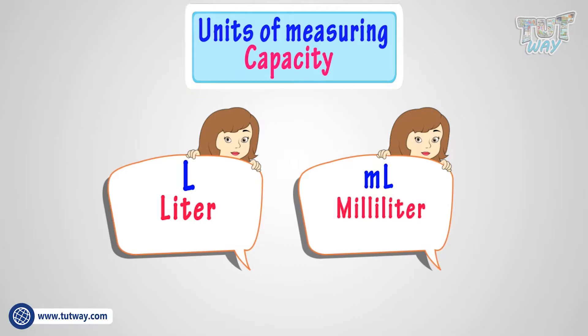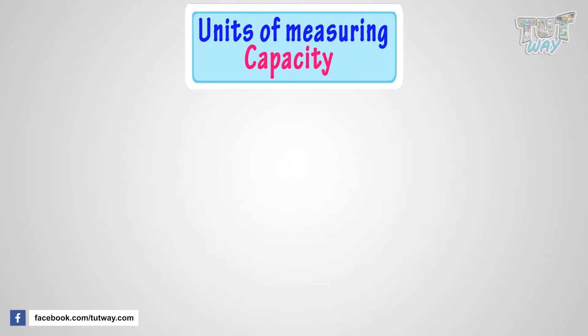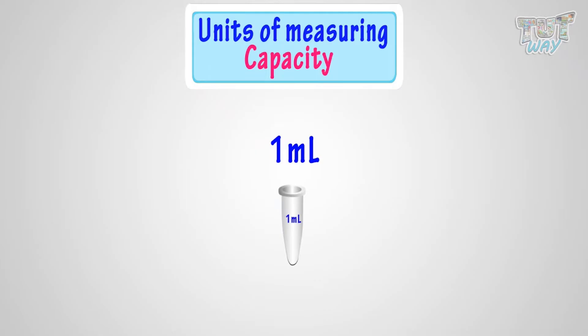Kids, one liter equals 1,000 milliliters. Now, let's see how much quantity is 1 milliliter. This small container can hold at most 1 milliliter of water. So, its capacity is 1 milliliter.